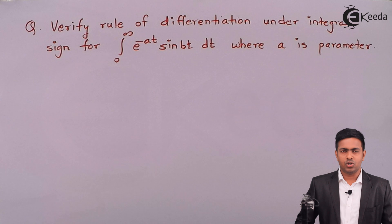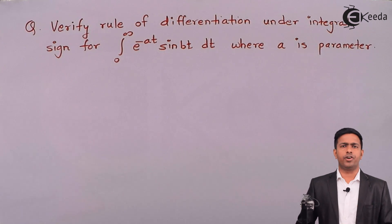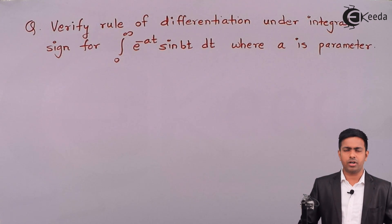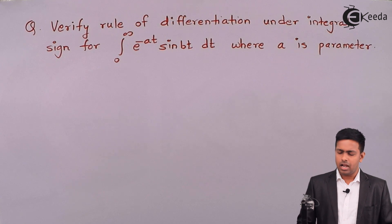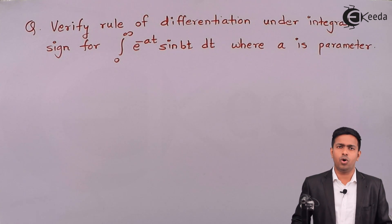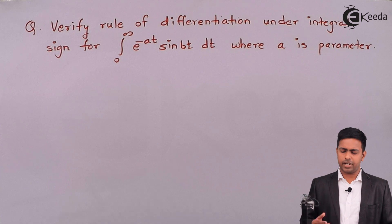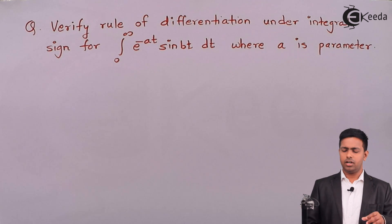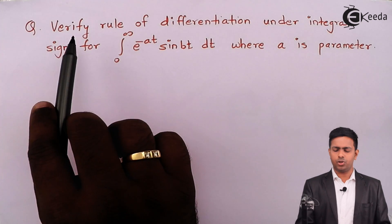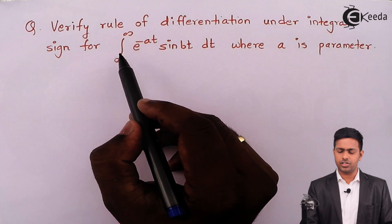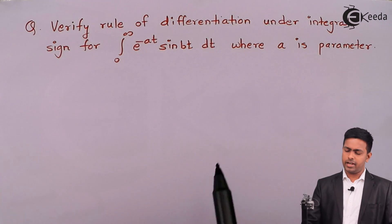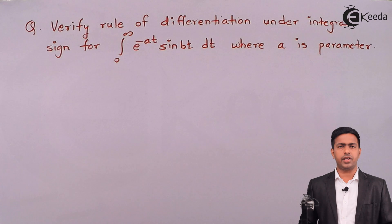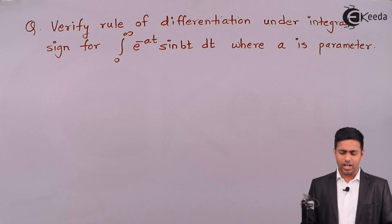Hello friends. Till this video we have seen multiple numericals on differentiation under integral sign. We have seen the concept proved by Leibniz, and now we will verify the rule of DUIS by considering the integration. Here we have a question: verify the rule of DUIS for the integration from 0 to infinity of e raised to minus at sin bt dt, where a is a parameter and t is the variable of integration.